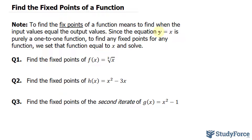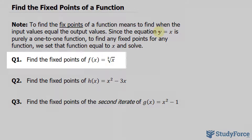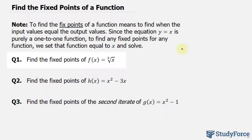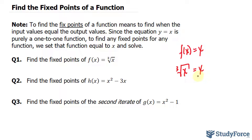I have three examples prepared. We'll start with question number one: find the fixed points of f of x equal to the cube root of x. All we have to do is set f of x equal to x. We have the cube root of x is equal to x. Remember that the cube root of x is the same thing as x to the power of one-third, equal to x.